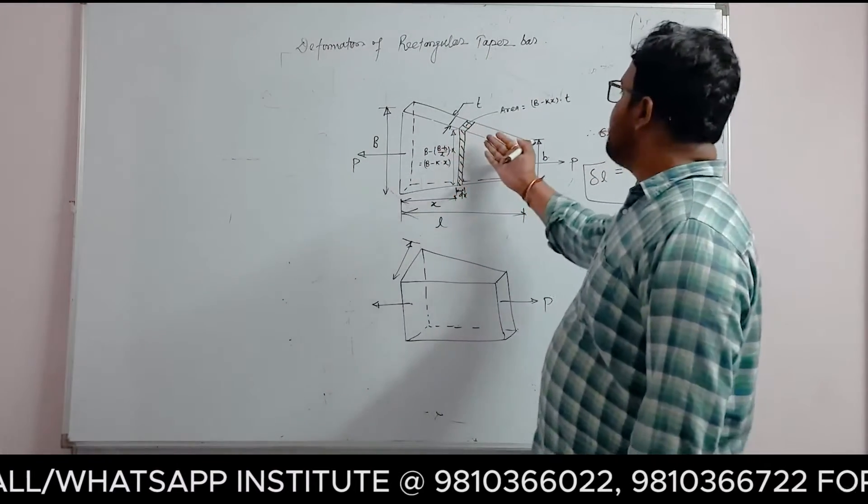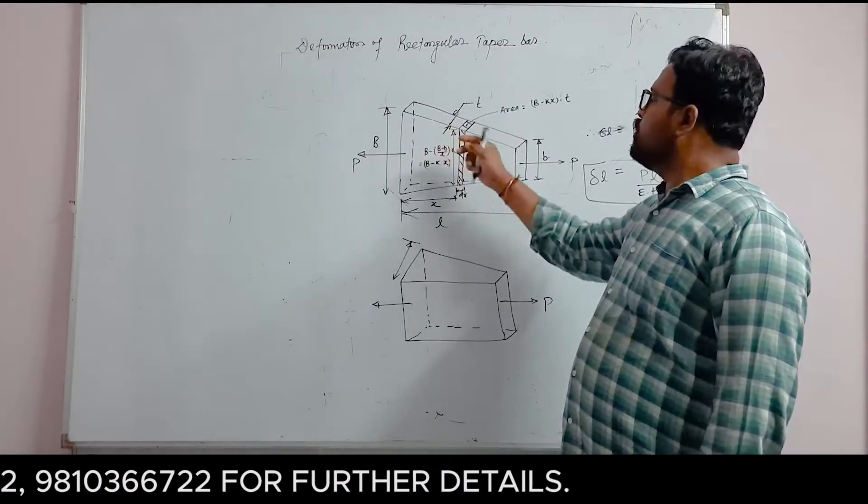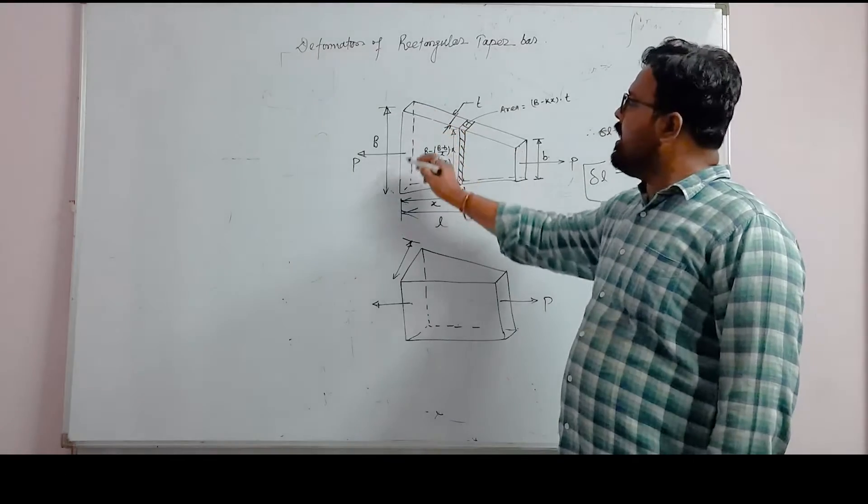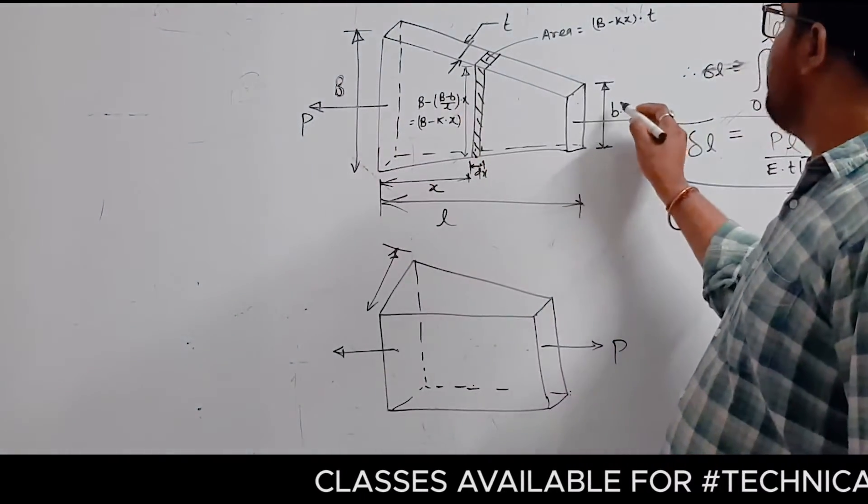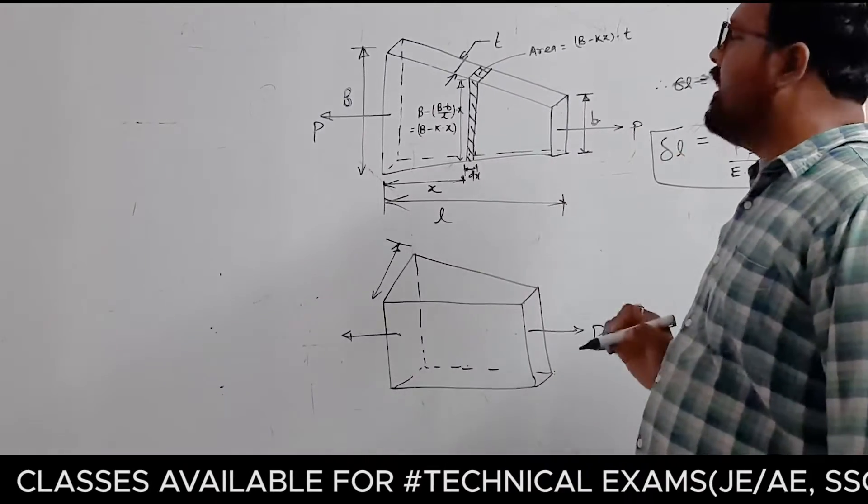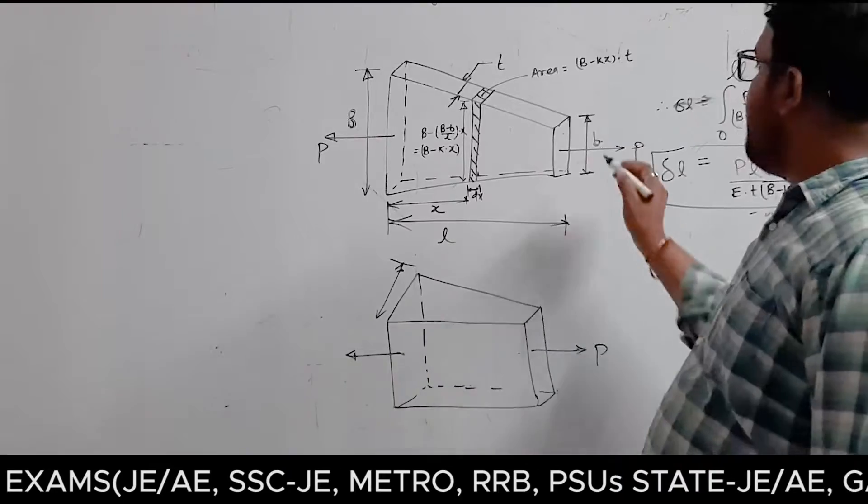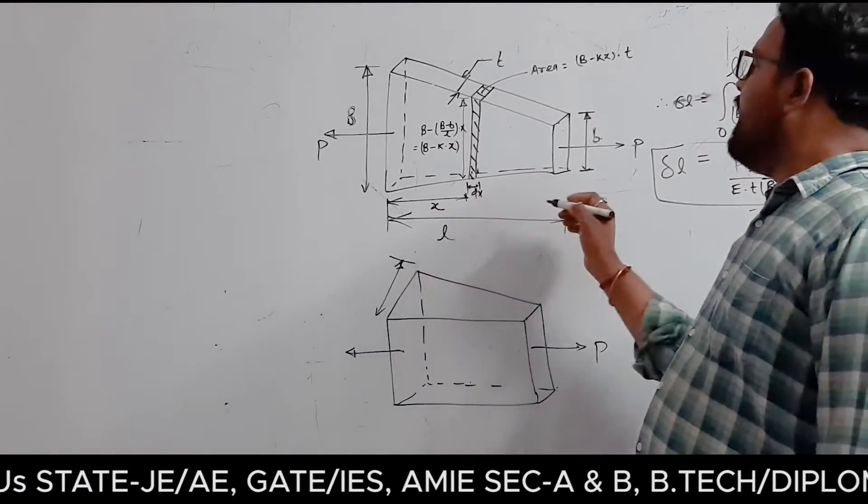This type is a rectangular tapered bar. This is basically a taper where the width of one end is capital B and the width of the other end is small b. So capital B is the larger end and small b is the smaller end, and this length is L.